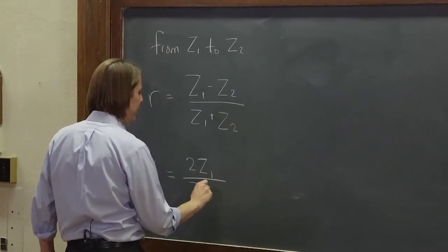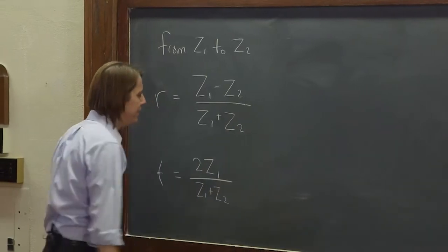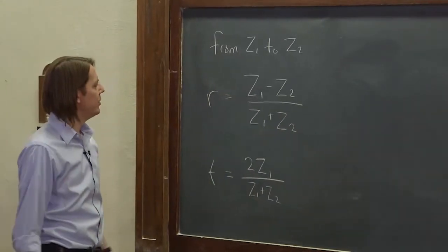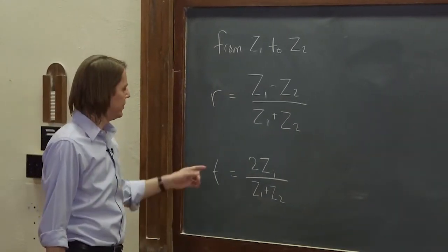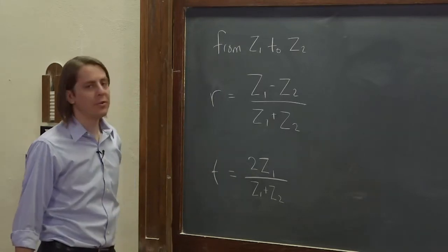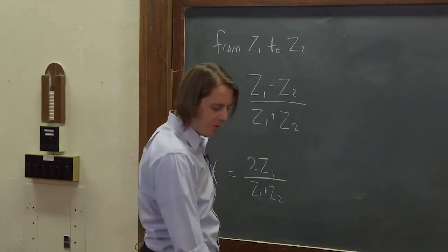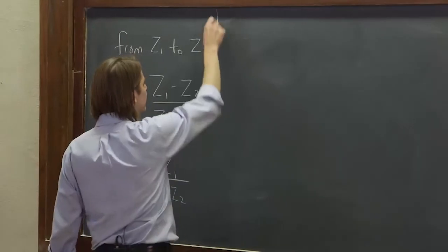So they're not that hard to memorize. They both have z1 plus z2 in the bottom. Just r is the difference, 1 minus 2, t is 2 times z1. So let's look at a couple of cases and see what happens.